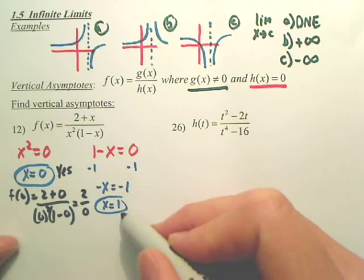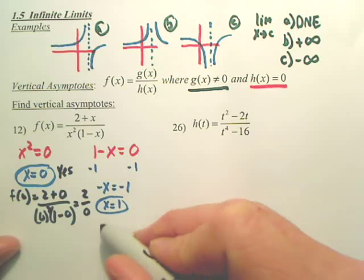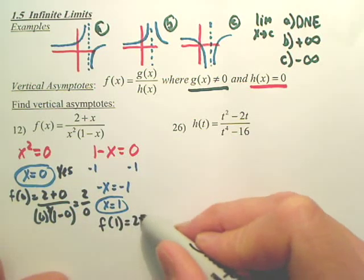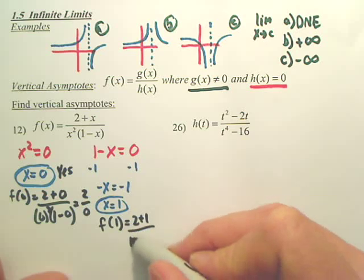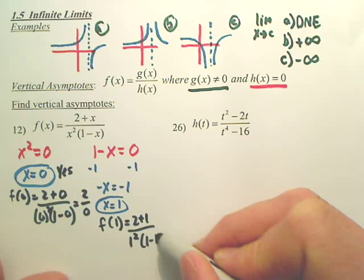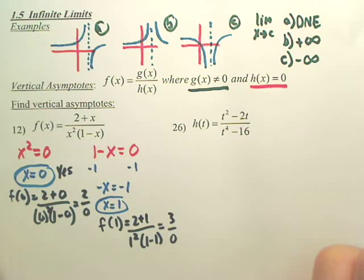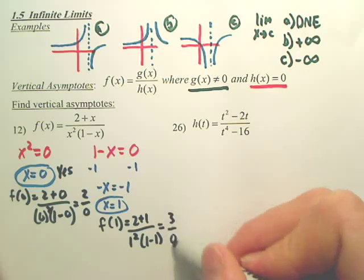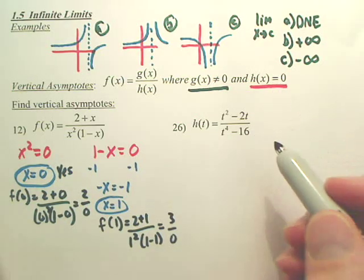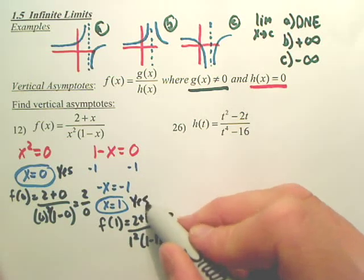Go to the next one. If you plug in f of one, you get two plus one over one squared times one minus one, which gives us three over zero. Three over zero. Is that a number, a non-zero over zero? So, would this be a vertical asymptote? Yes.